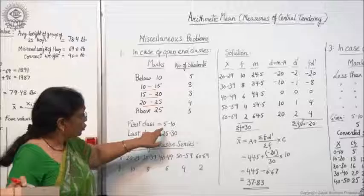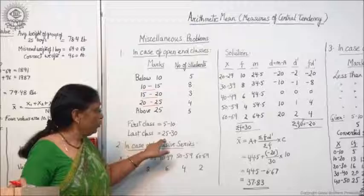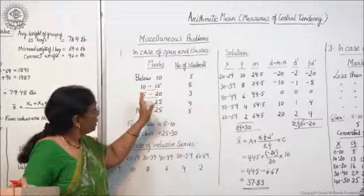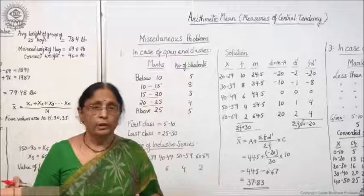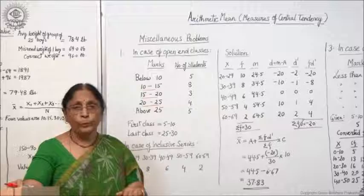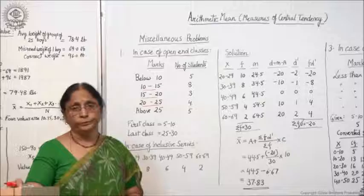So both the open ends you have closed by taking the class interval of 5 to 10 and 25 to 30. Now after doing this, the same process will be followed as you have done earlier in the case of continuous series, because this is the case of class intervals. So you will take out the midpoint and do the calculation as I told you in the previous lecture.